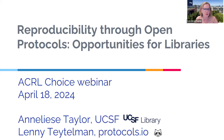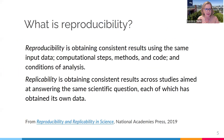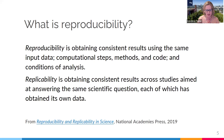Hello everyone. We thought it would be good to start by clarifying what we mean by reproducibility. A definition of reproducibility is the process of obtaining consistent results using the same data, the same methods, computational steps and code, and the same data analysis and conditions of analysis. A related term is replicability, which means obtaining consistent results across studies looking at the same scientific question but where each study has its own data. I will be using the term reproducibility more broadly to refer to obtaining consistent results using data and similar methods.